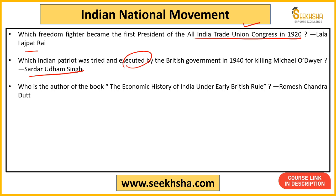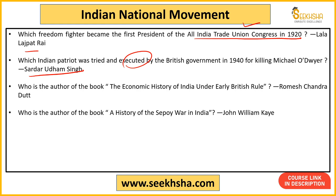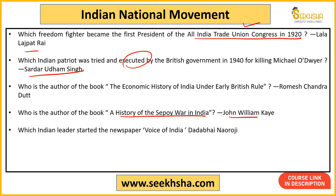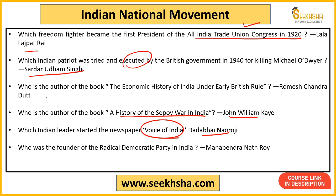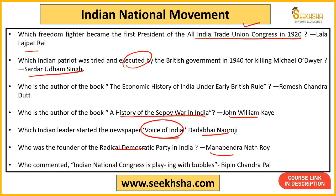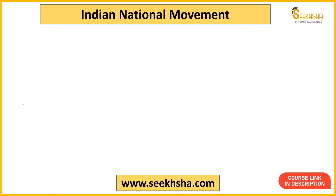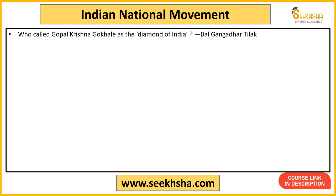The book 'Economic History of India Under Early British Rule' was written by R.C. Dutt (Romesh Chunder Dutt). 'History of the Sepoy War in India' is a book by John William Kaye. The newspaper 'Voice of India' was Dadabhai Naoroji's. The founder of the Radical Democratic Party in India was Manabendra Nath Roy (M.N. Roy). The statement 'Indian National Congress is playing with bubbles' was given by Bipin Chandra Pal, who belonged to the extremist section.